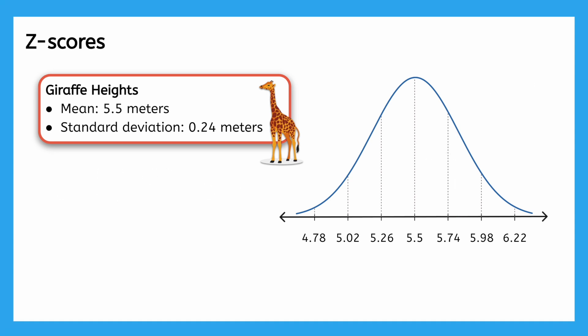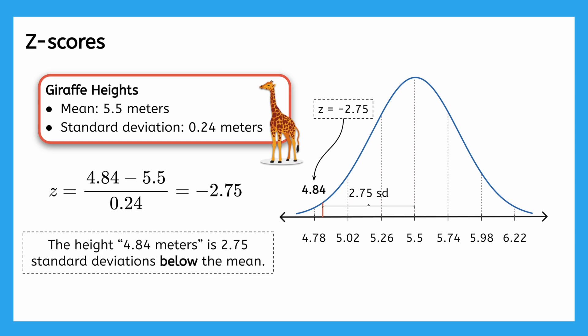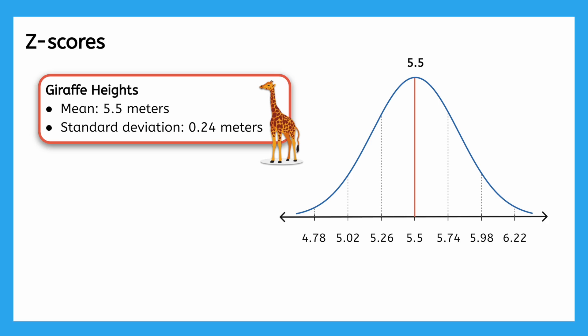What about a giraffe that is 4.84 meters tall? Pause now to calculate and interpret the z-score for the value 4.84 meters. This giraffe has a z-score of negative 2.75, which means that the height of this giraffe is 2.75 standard deviations below the mean. What about a giraffe that is 5.5 meters tall? Well, that would just be a z-score of 0 because the value is equal to the mean.